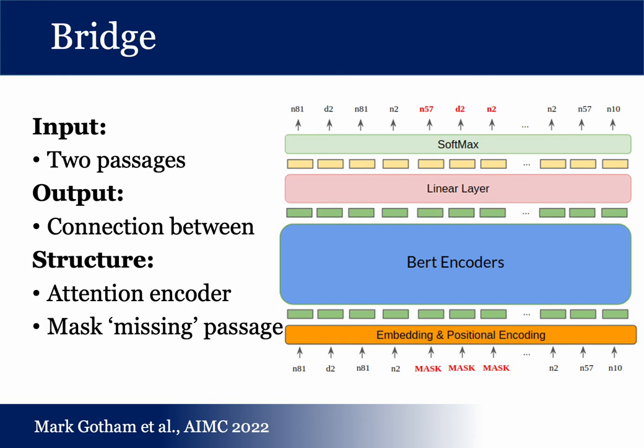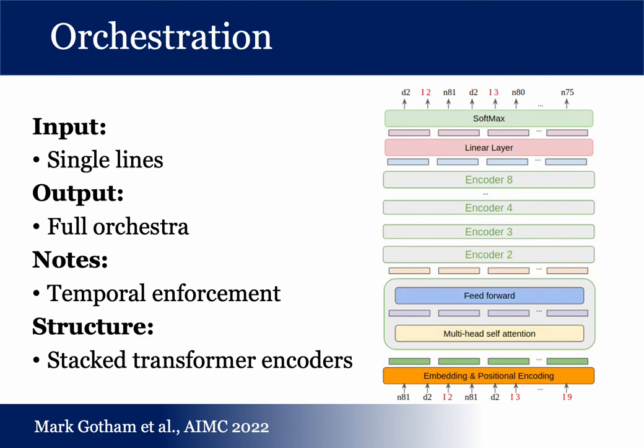For bridging between two passages of music, or else replacing a short segment that is considered undesirable for whatever reason, we developed a system based on BERT, in which short passages are randomly masked out from the training corpus to learn how these are typically filled in. And the orchestration model works in a similar way, where the known element is pitch, duration, and so on, and the unknown element is the orchestral allocation.